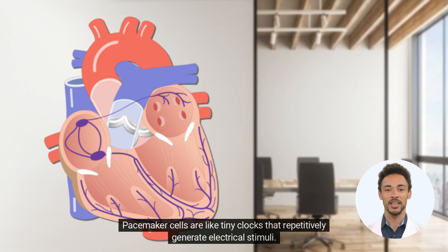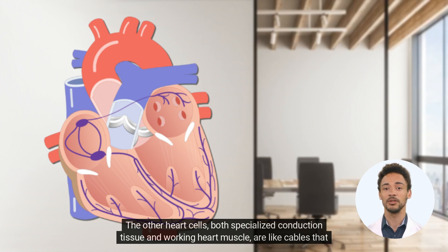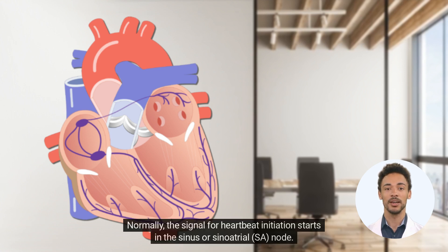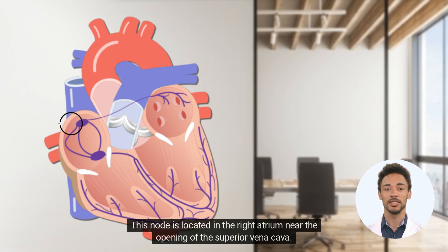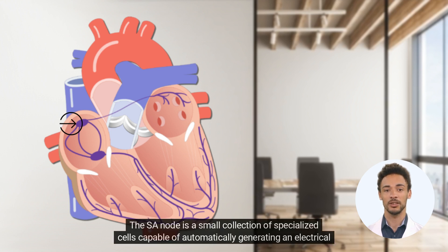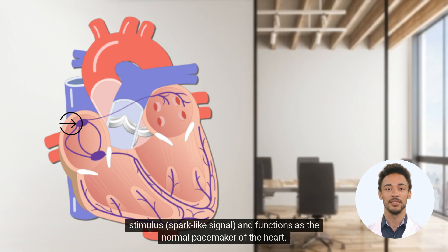Pacemaker cells are like tiny clocks that repetitively generate electrical stimuli. The other heart cells — both specialized conduction tissue and working heart muscle — are like cables that transmit these electrical signals. Normally, the signal for heartbeat initiation starts in the sinus, or sinoatrial, node. This node is located in the right atrium near the opening of the superior vena cava, and is a small collection of specialized cells capable of automatically generating an electrical stimulus, functioning as the normal pacemaker of the heart.